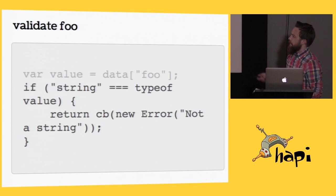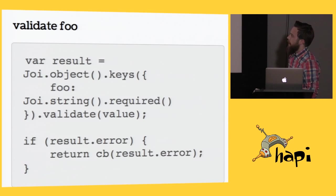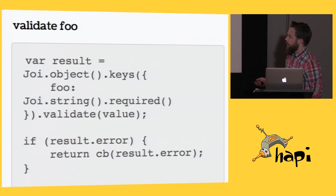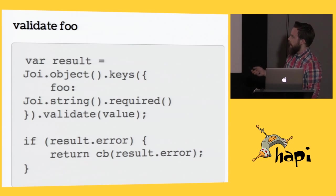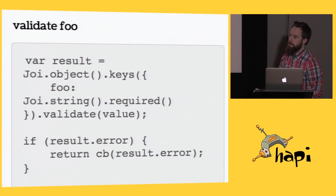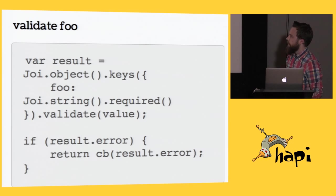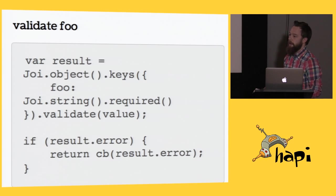Instead of having to write validation checks over and over again, I'd encourage you to be using Joy, where instead you're only checking to see if an error ever happened and not if every single possible validation error ever happened. Leave that to Joy's own tests — it's very well tested — so then you don't have to check for common mistakes to get a high level of coverage.